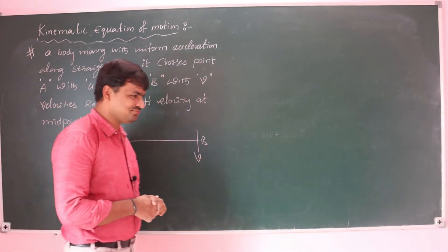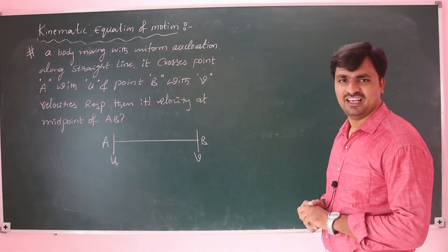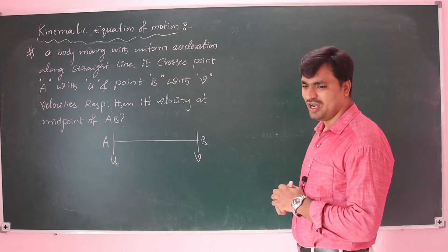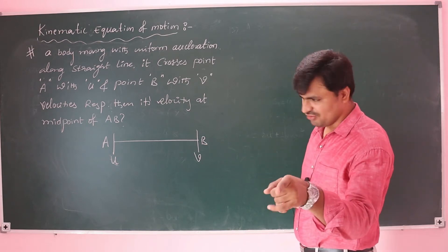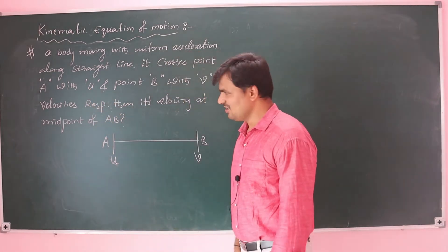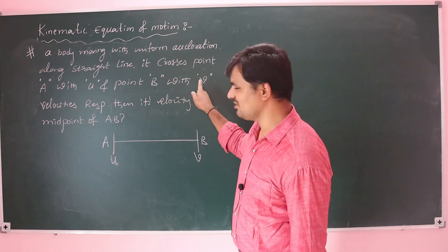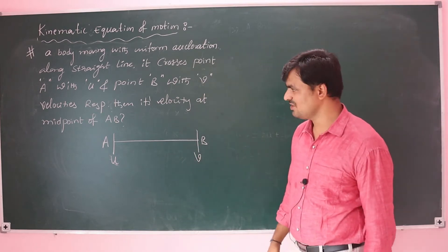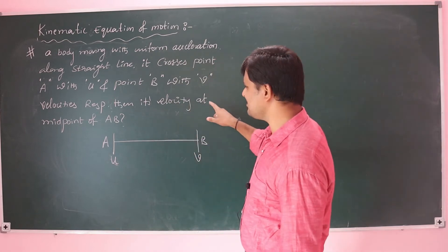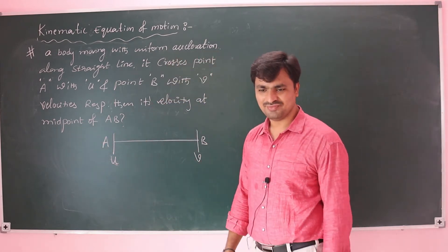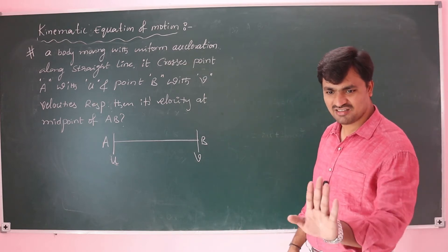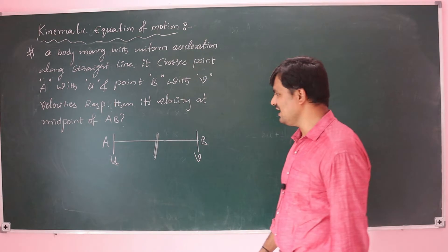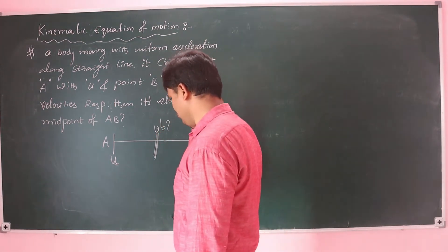Let's see one more problem. A body moving with uniform acceleration along a straight line covers point A with velocity u and point B with velocity v. What is the velocity at the midpoint of AB?